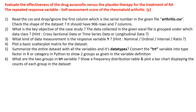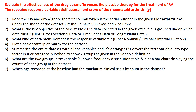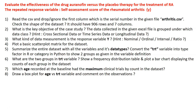Next, identify which age recorded at baseline had the maximum number of clinical trials by count in the dataset. Then draw a box plot for age versus the TRT treatment group variable and comment on your observations — for example, the average, minimum, maximum, and whether one treatment group shows more outliers than the other. These observations go a long way in your data interpretation.